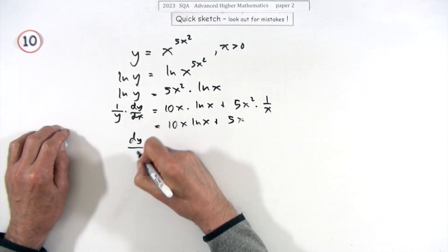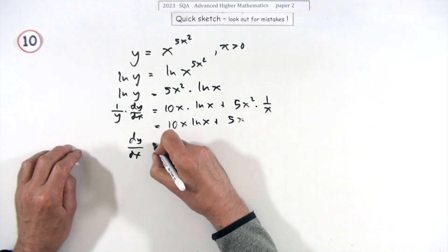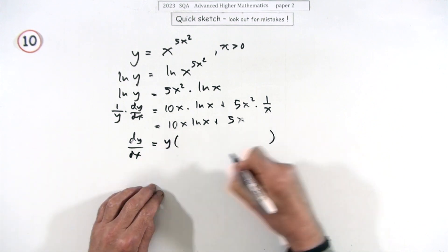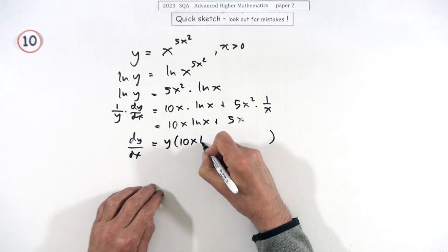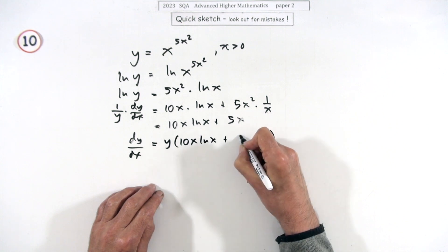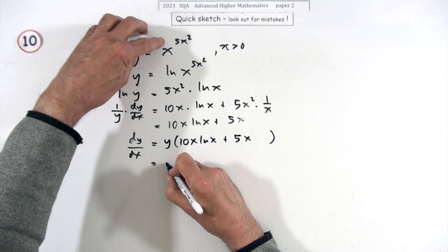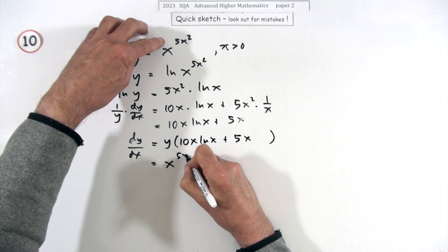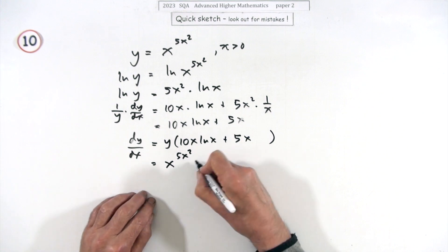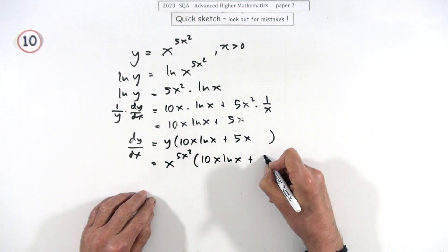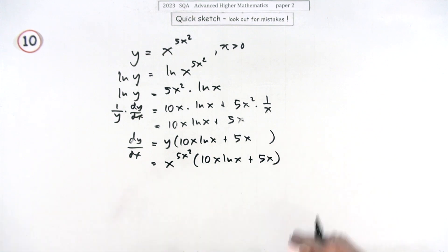Now to get dy/dx on its own, you take the y across and multiply. I'll just do that, okay, it's a waste of a line but there we are: 10x ln x plus 5x. Or I could take that 5x out as a common factor, but what was y? y was x to the 5x squared, so it's that times 10x ln x plus 5x. Now is that all they want for their answer? Because that's it done.